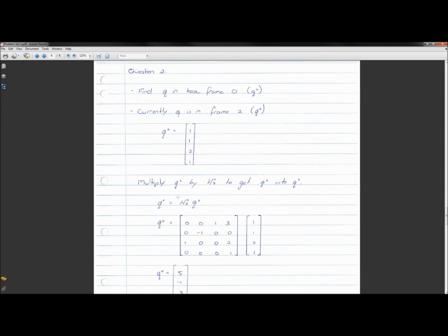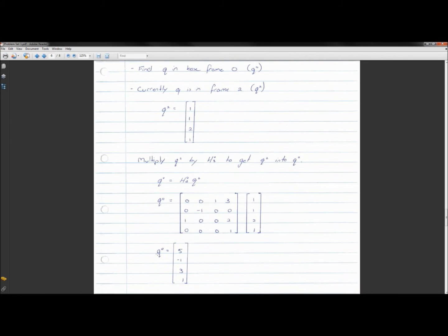So what we do is we multiply our homogeneous transform by our Q2, and you kind of notice that these things kind of like cancel as such almost. You can think of it like that to get Q0. So multiply our homogeneous transform by Q2 to give us Q0, and we get 5X, negative 1Y, and 3Z in the base reference frame, which, as I explained before, is what we should expect. So this thing makes sense.